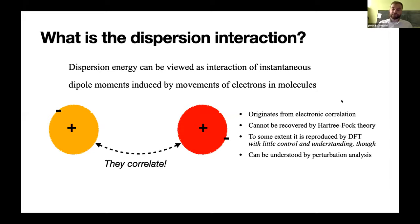Dispersion energy is the energy which is not recovered by Hartree-Fock theory. To some extent, it is reproduced by DFT, but with little control and little understanding, although it improved slightly in recent years, but can be very well understood in terms of perturbation analysis, which provides symmetry-adapted perturbation theory.